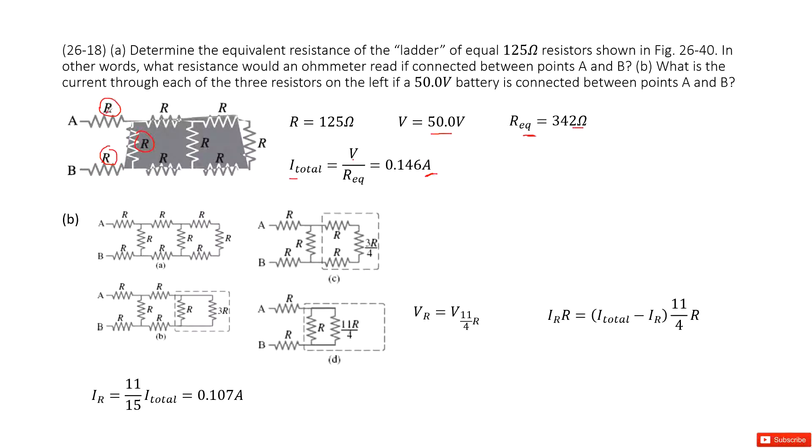So for these two, it's easy. This is just the I_total that goes through them because these two resistors are in the main branches. The only difficult part is to look at the current that goes through this resistor.